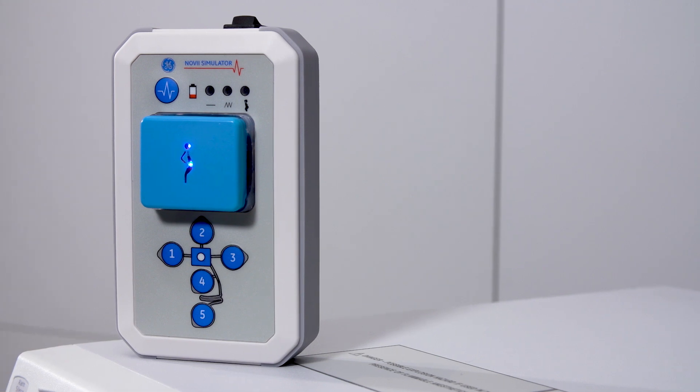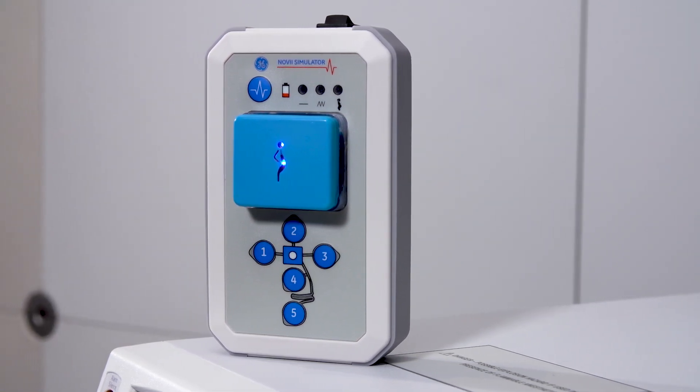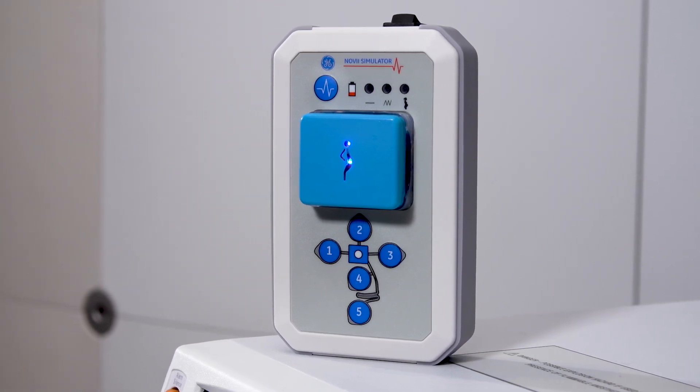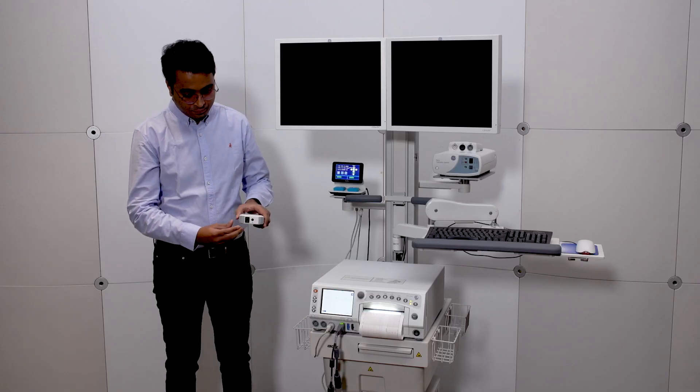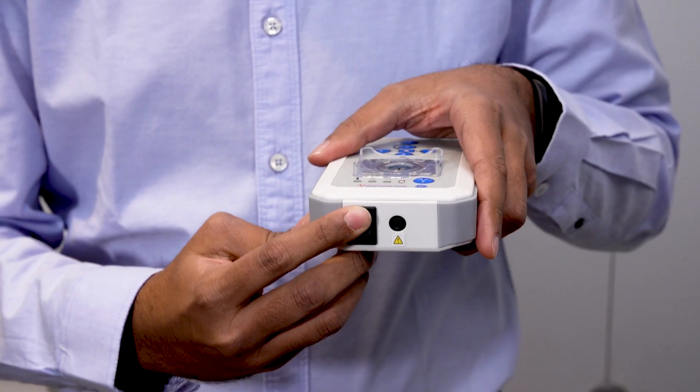The Novi Simulator, with its different modes and features, is used to help troubleshoot Novi pods by simulating maternal heart rate, fetal heart rate, and uterine activity signals in order to rule out pod malfunction concerns. At the top of the simulator is the power switch, which will turn the device on and off, like this.